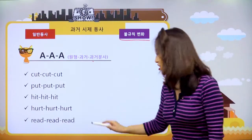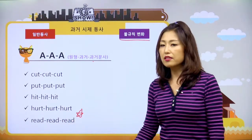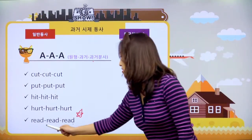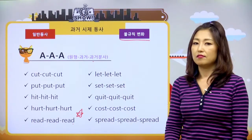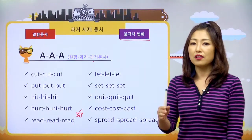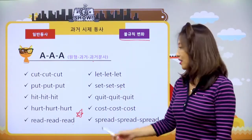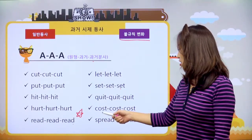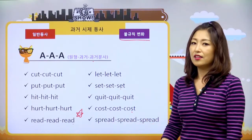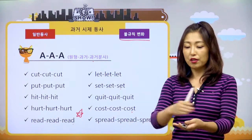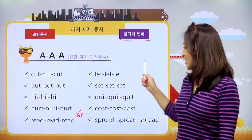read는 읽다죠. 그런데 과거는 red라고 읽어야 해요. 굉장히 중요해요. let/let/let - 뭐 하게 하다. let's go 할 때 그 let's이지만 원래 뜻은 누구로 하여금 무엇을 하게 하다라는 뜻이고요. set/set/set - 상을 차리다, 자리를 잡다. quit/quit/quit - 그만두다, 끝내다. cost/cost/cost - 비용을 지불하다, 얼마가 들다. spread/spread/spread - 빵에 잼 바르는 것처럼 바르다. 얘네는 모양이 같으니까 괜찮네요.